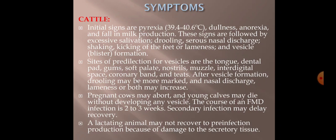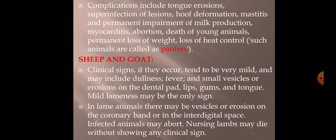In cattle, symptoms include high fever, fall in milk production, excessive salivation, drooling, nasal discharges, lameness, and vesicle or blister formation — which is the peculiar sign of FMD virus. Vesicles are seen on the tongue, dental pad, gums, soft palate, nostrils, and interdigital spaces. Pregnant cows may abort, and lactating animals may not recover because the secretory tissue gets damaged.